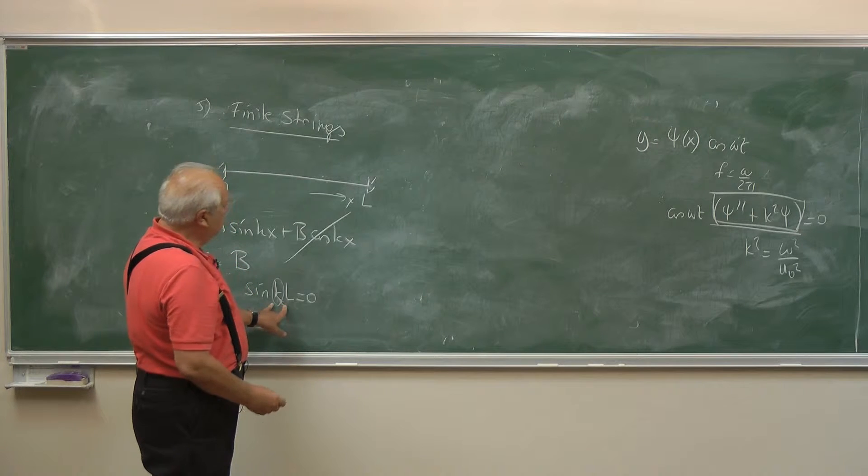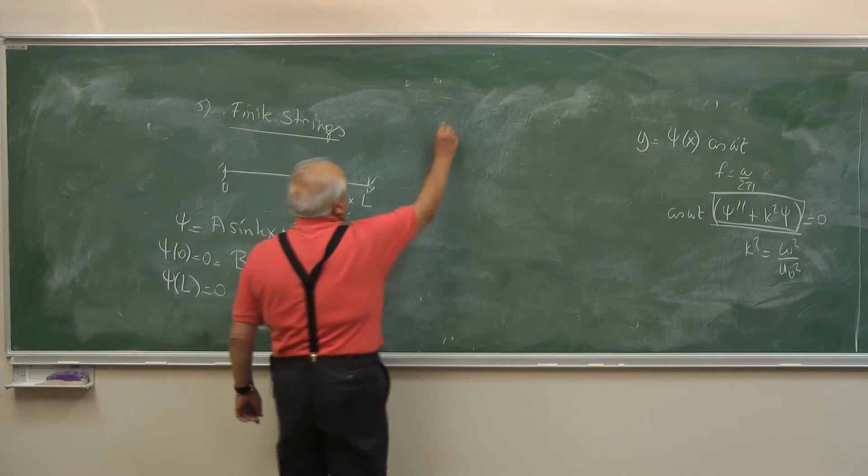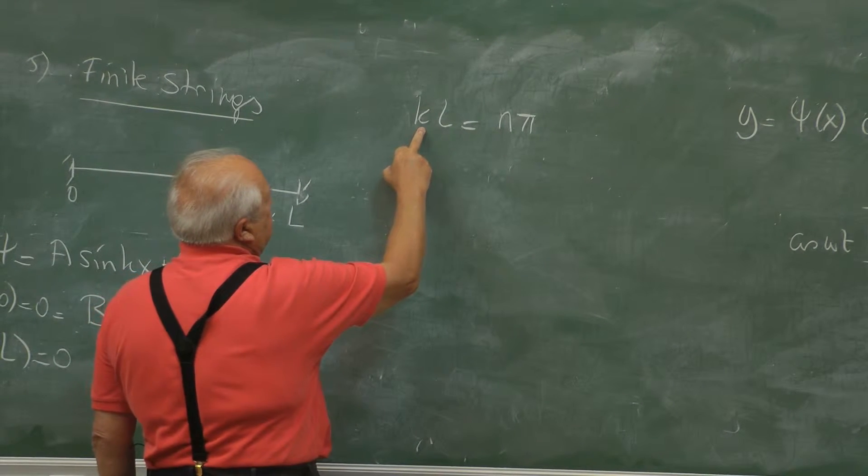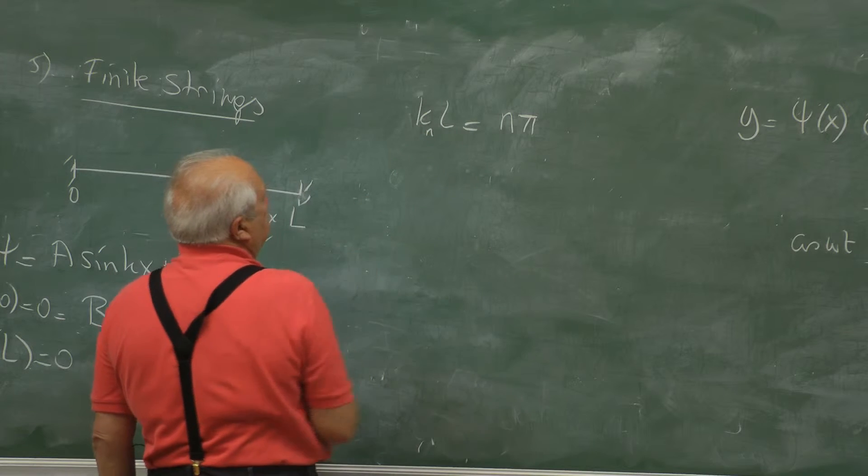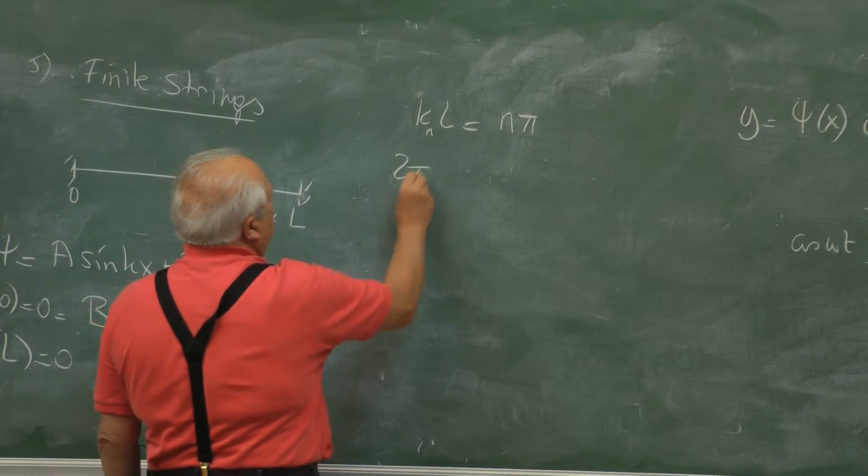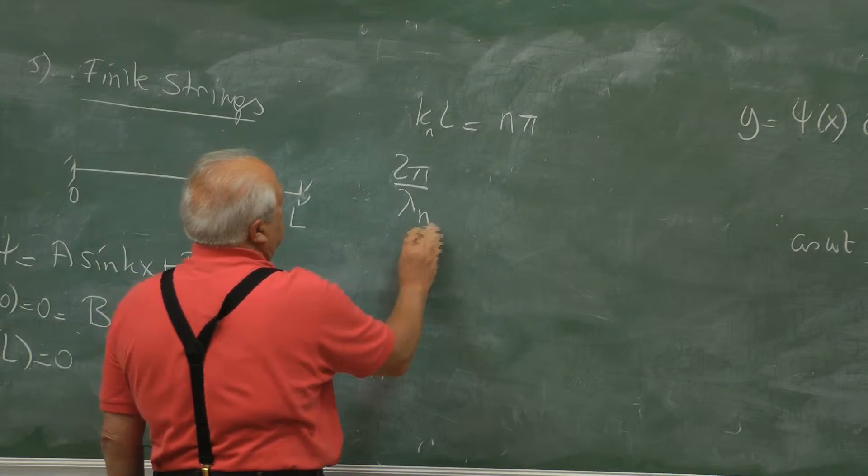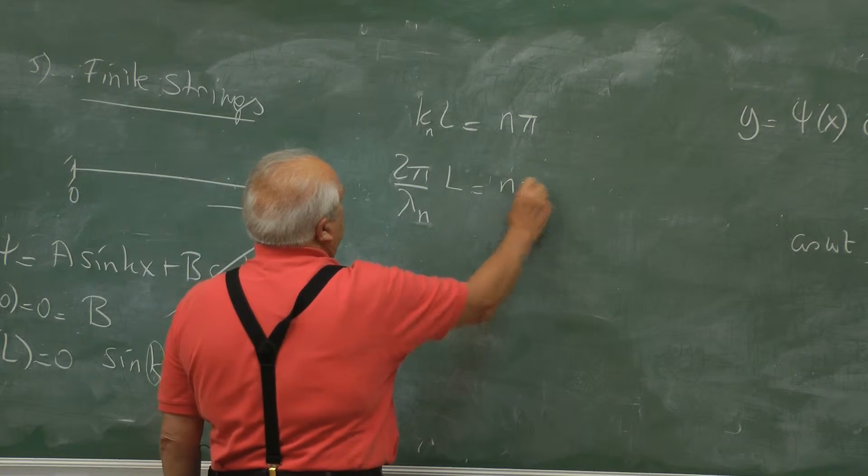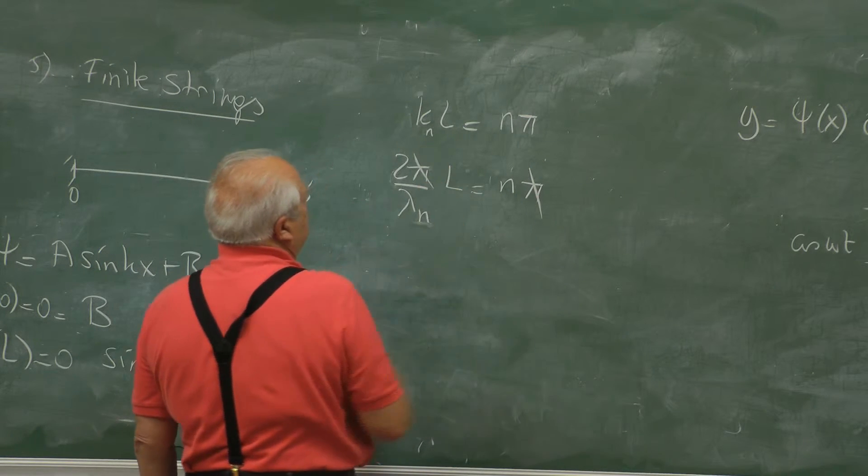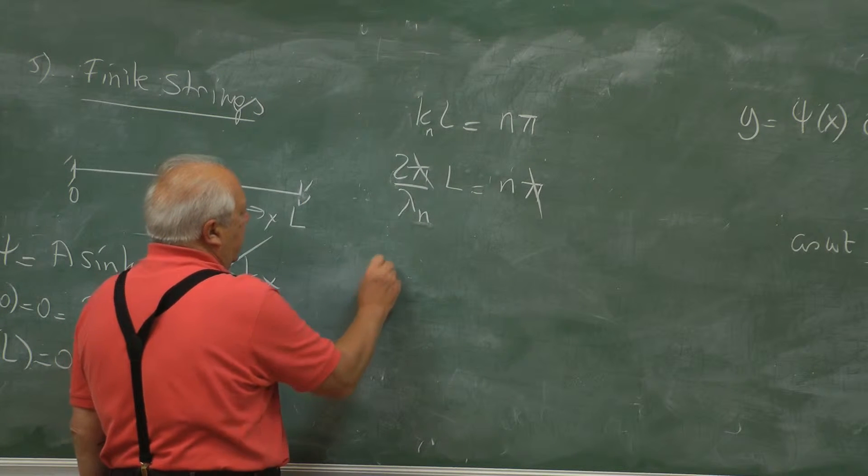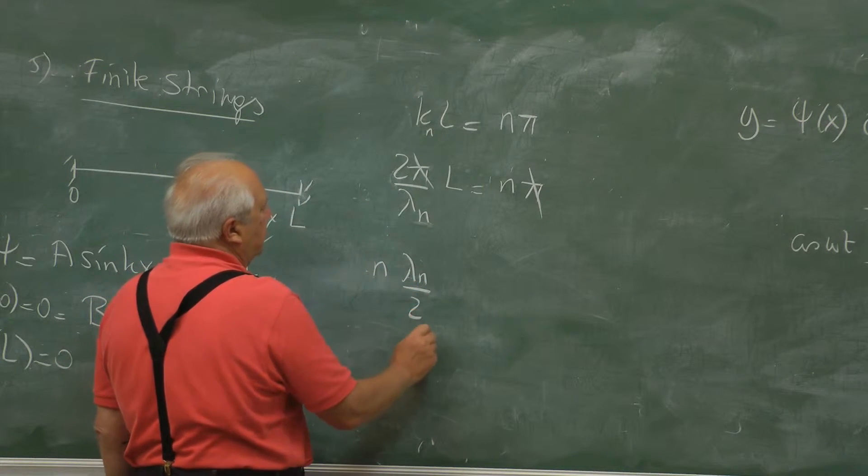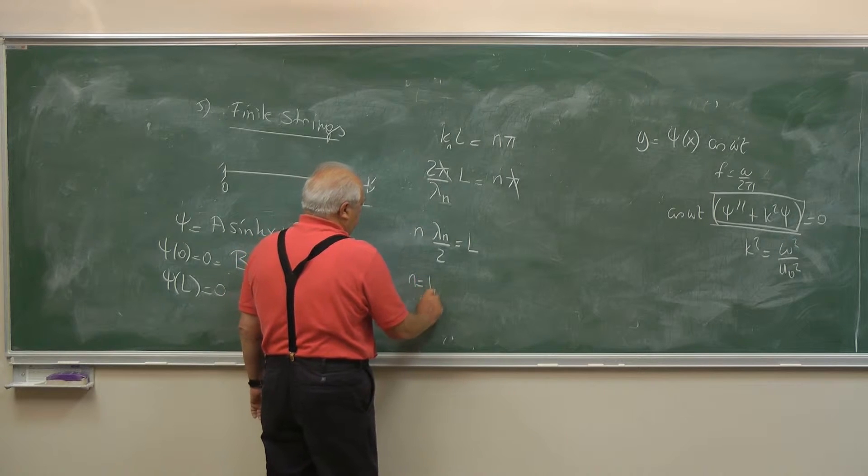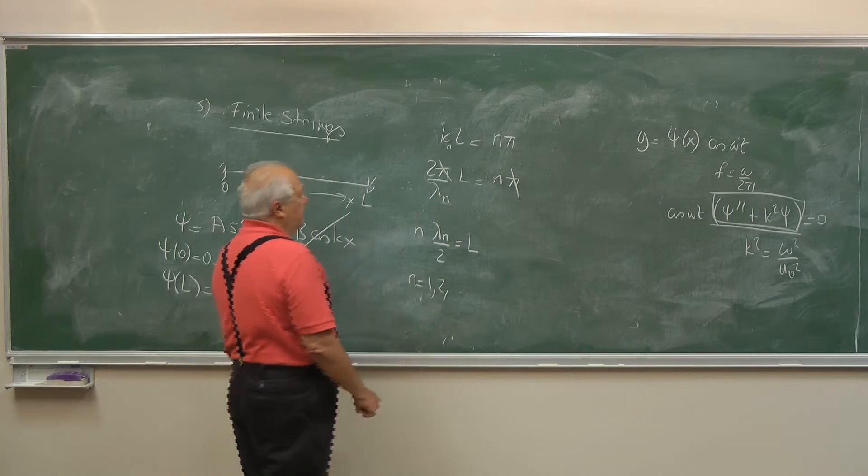That means sin(kL) = 0 means kL must be kₙL = nπ. Now I can put a subscript on k. kₙL = nπ. This is 2π/λₙ. We did this before. k is wave number. And this times L equals nπ. π is cancelled. So I can write this equation in this form: n times λₙ/2 equals L, and n goes from 1 to all positive integers.